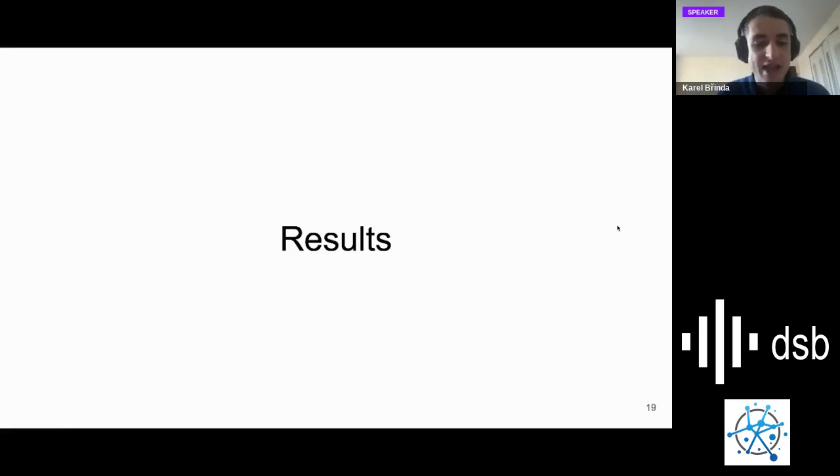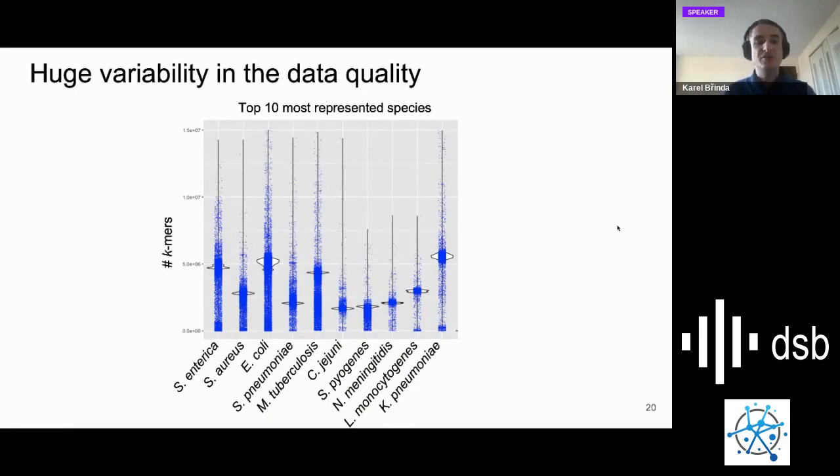Let's see how it looks when you do all of these steps on the entire microbial corpus. The first thing to observe is that there's huge variability in the data quality, and this is why compression is tricky. These are not nice cleaned assembled genomes; these are pretty dirty k-mer sets. When you look at the top 10 most represented species, you'll see there's huge variability in terms of number of k-mers present. Of course, many of these things are contaminated or contain a lot of technological artifacts, bioinformatics artifacts, and we need to be able to compress even these.